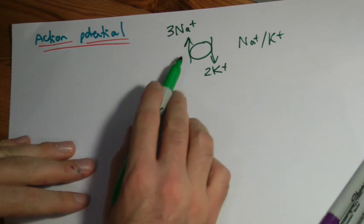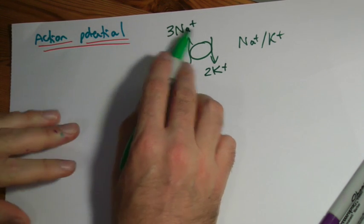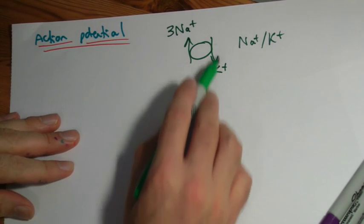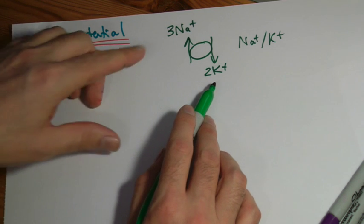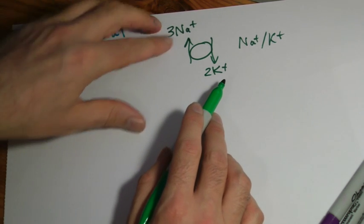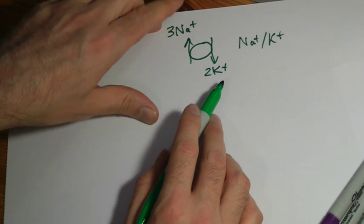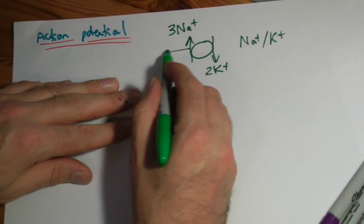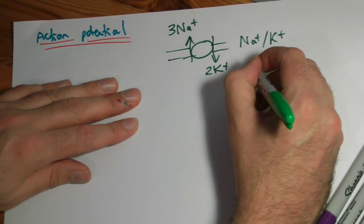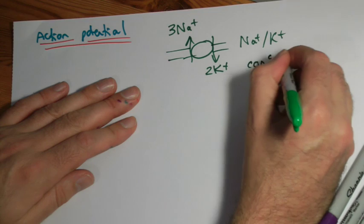What it does is it pumps three sodium ions out of the cell and at the same time pumps two potassium ions in. So we've got more positive ions coming out of the cell than we have coming in. This will be sitting in the membrane, and what this is doing is it's maintaining a concentration gradient.